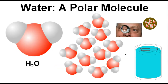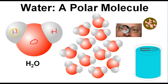Before we start talking about what substances are soluble and insoluble in water, the first thing we need to do is take a look at water itself on a microscopic level. If we take a look at water, what we notice is that water is polar in nature. This water molecule, which is made up of one oxygen and two hydrogen atoms, has a side that is slightly more positive and a side that is slightly more negative.